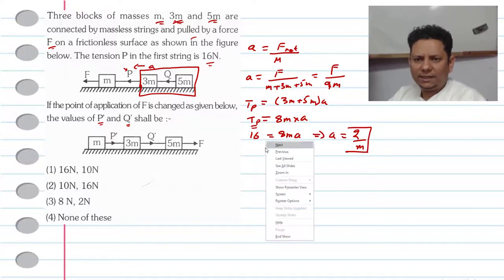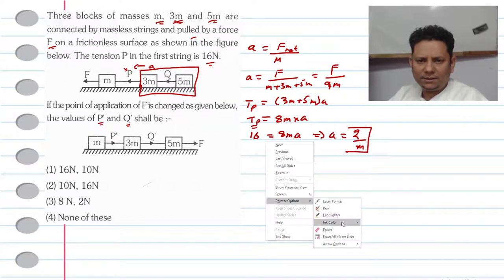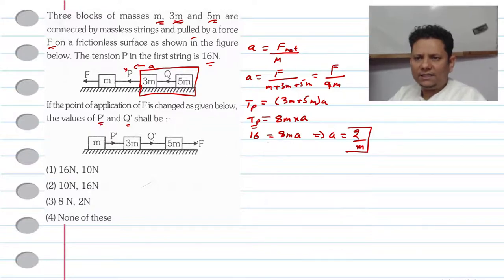In the next case, what do we do? We apply the force from the other direction. Because the total mass is the same, the acceleration F_net divided by total M will be the same: F divided by M plus 3M plus 5M, so F divided by 9M.